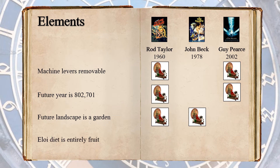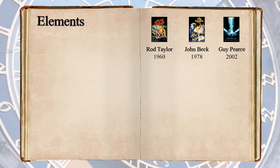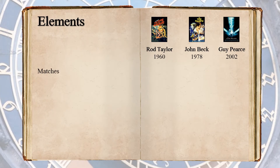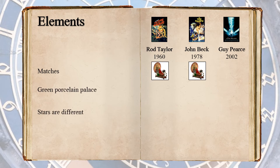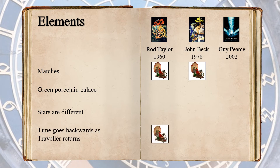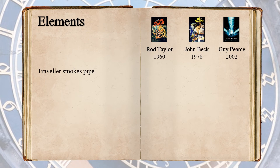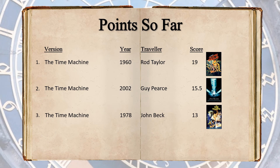The time machine's levers are removable in both Taylor and Pierce, and both these versions also accurately depict the far future date as being the year 802,701. The future landscape is a garden in Taylor and Beck, though in Beck it's surrounded by a desert. Pierce's future is more of a jungle. The Eloi diet is entirely fruit in Taylor and Beck — it's not clear in Pierce they only eat fruit. The traveler carries matches in Taylor and Beck. There is a green porcelain palace in the distance the traveler is interested in, though no film version depicts this, nor does any version show that the stars are different in the future. After all element points, Taylor still leads with 19 points, Pierce holds second with 15.5 points, and Beck remains in third with 13 points.